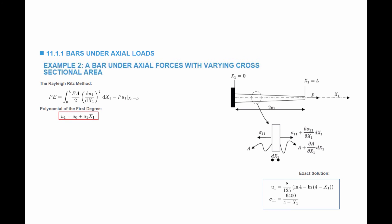First, let's try a polynomial of the first degree. We skip a zero-degree polynomial because the condition that u1 equals 0 at x1 equals 0 would force the constant to be zero. So we assume u1 equals A0 plus A1·x1. Applying the essential boundary condition at x1 equals 0, the horizontal displacement equals 0, which forces A0 to equal 0. The displacement is now a function of only one unknown: u1 equals A1·x1.